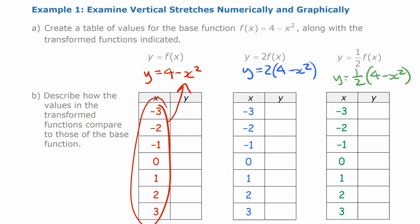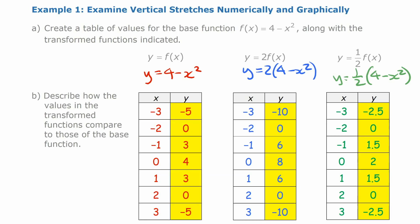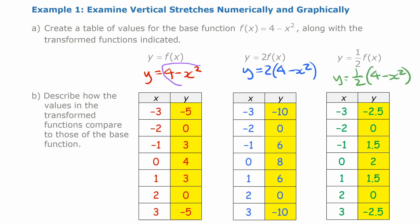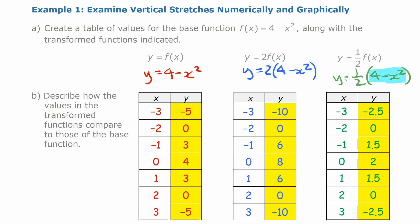We fill out tables of values by substituting x values in. In the interest of time, they are pre-filled. The y values are highlighted because those are what differ. When you substitute in the same x values, for 2f of x you take the result and multiply by 2, so those y values are all double. For one-half f of x, you multiply by one-half, so those values are all cut in half.